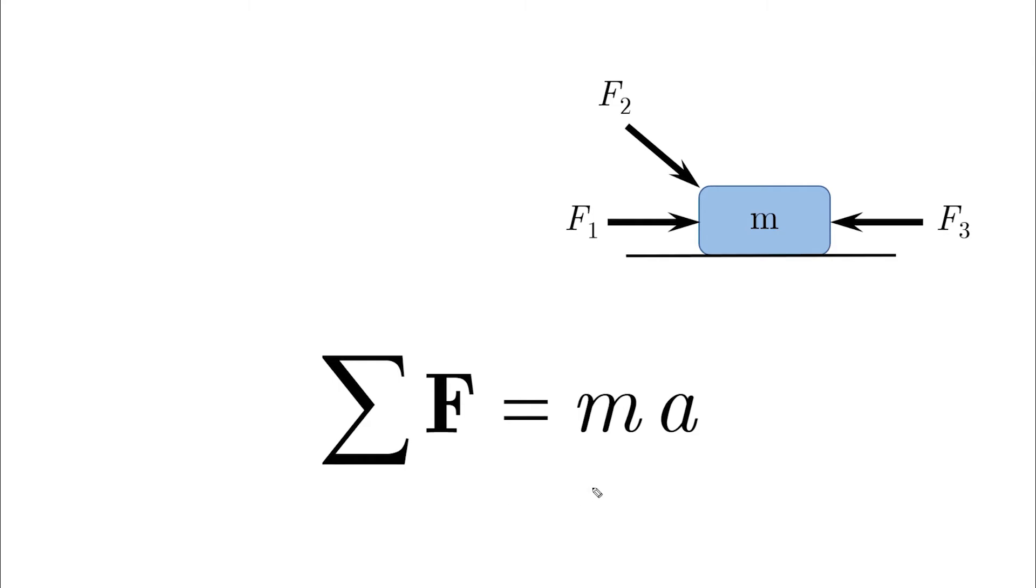But let's say that the mass M has many forces acting on it in different directions. How do we know in this case the direction of the acceleration? Well, in this case, we have to use the standard definition of Newton's second law, which states that the summation of forces acting upon mass M is equal to M times A.